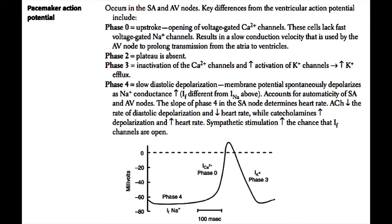There are different phases to this action potential, and the internal electrical environment changes with time. Phase four is the resting point, and phase zero is the upstroke, the first phase of the action potential. Phase zero occurs when phase four reaches the threshold potential. Phase four gradually increases in pacemaker cells because of the funny current. In phase zero, the upstroke is caused by opening of voltage-gated calcium channels. Calcium goes inside the cell, making the interior more positive, which is why the voltage goes from negative 60 to positive 10.